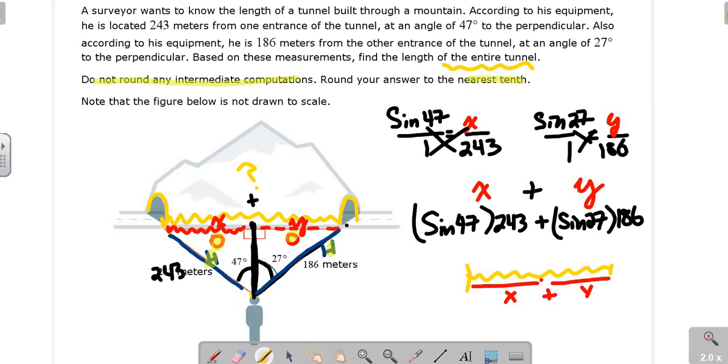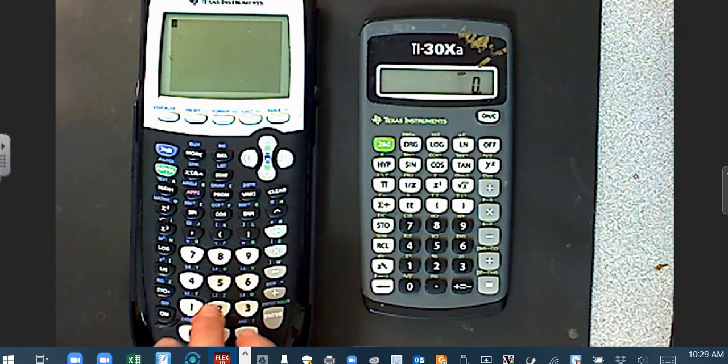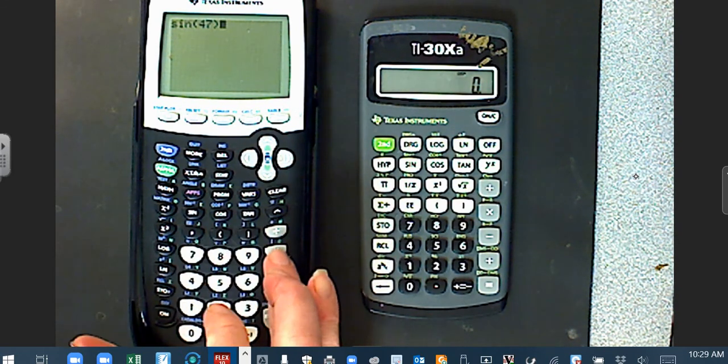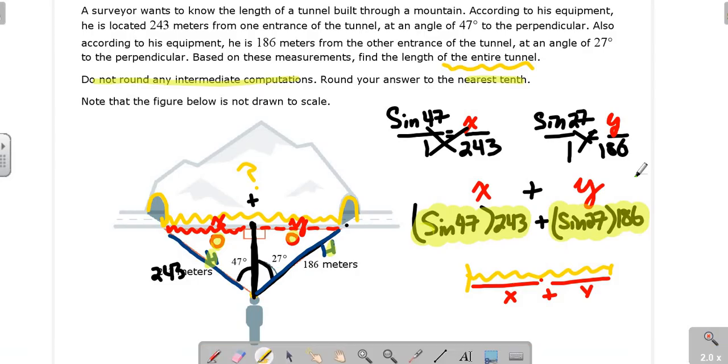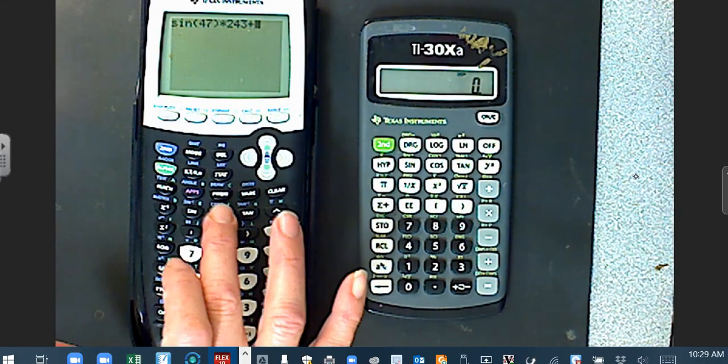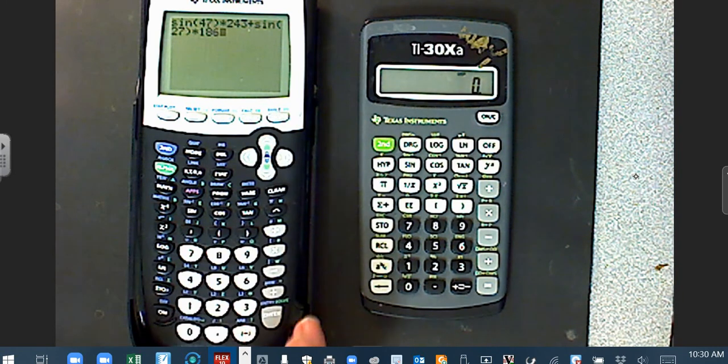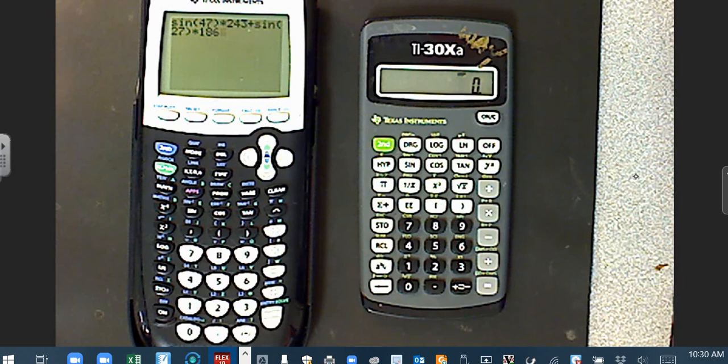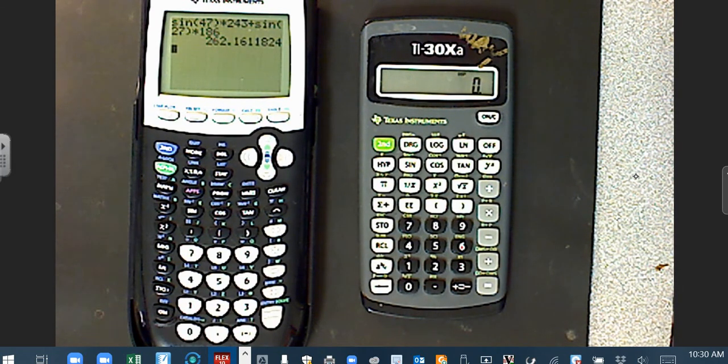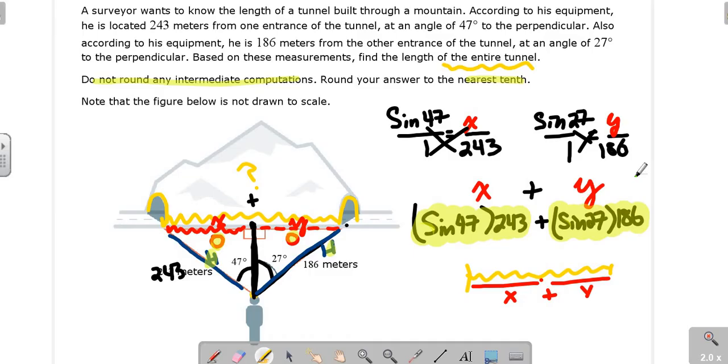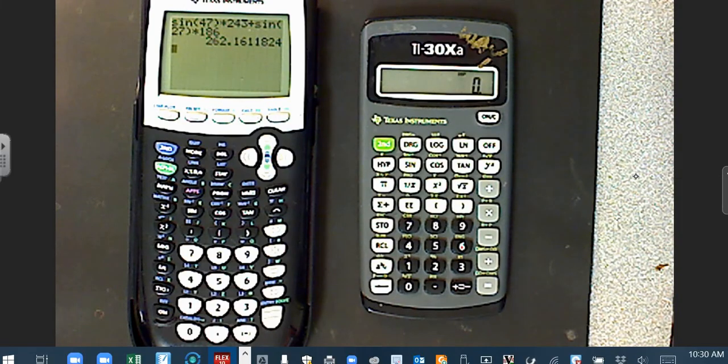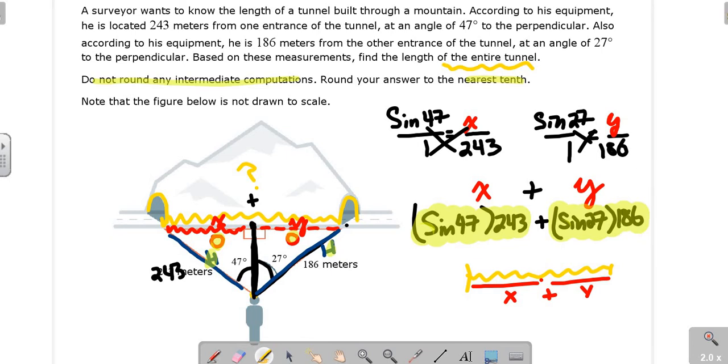So this, my friends, is what's going to go in your calculator in one fell swoop. Watch very carefully. Sine 47 parentheses times 243, plus sine 27, close up that parentheses, times 186. Got it. All together. Drum roll. Ta-da! 262 feet. 0.16. We're at tenth, that'd be 262.2. So our yellow is 262.2.